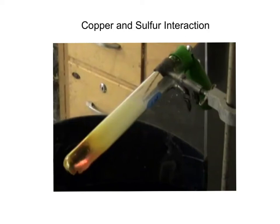Hi guys, we're going to do a lab called copper and sulfur. Make sure you have your lab sheets in front of you as you're watching this tutorial — that's why I gave them to you as paper copies. On the first sheet, it tells you that the objective is to observe the changes that occur when copper and sulfur are heated.